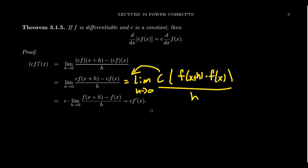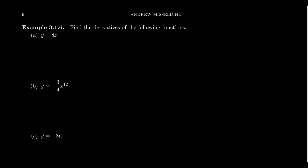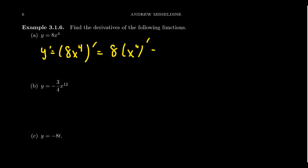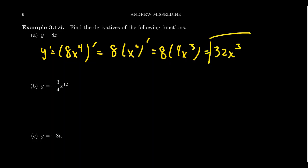When you combine that with the power rule, it allows us to calculate more types of functions. Take y equals 8 times x to the fourth. By the constant multiple rule, y prime equals 8 times the derivative of x to the fourth. By the power rule, that's 4x cubed. Then 8 times 4 gives you 32x cubed as the derivative.